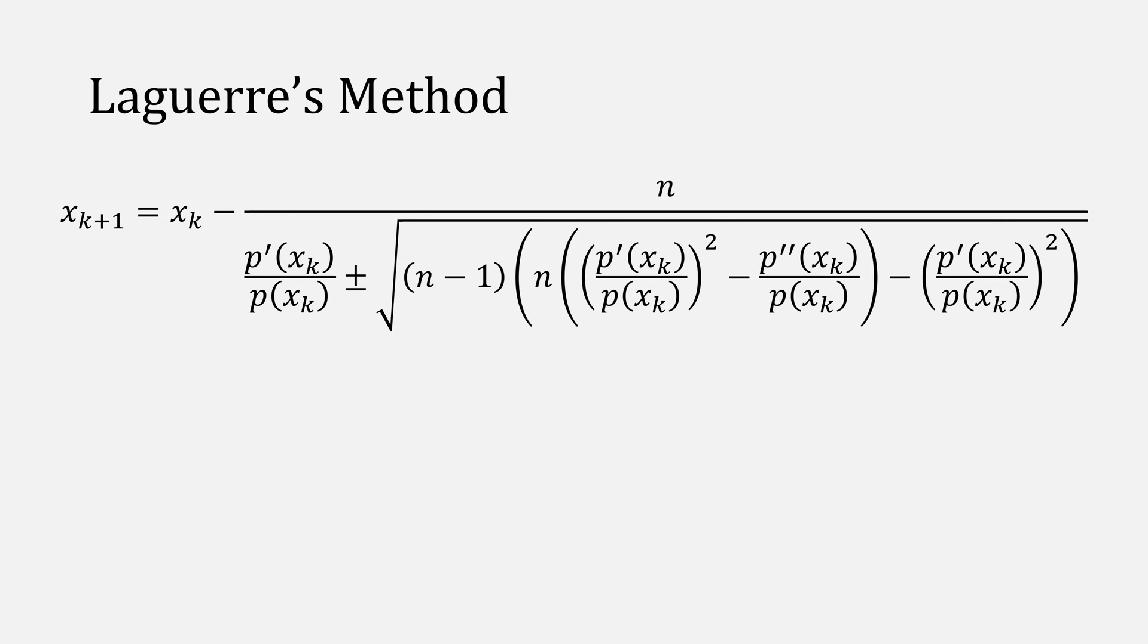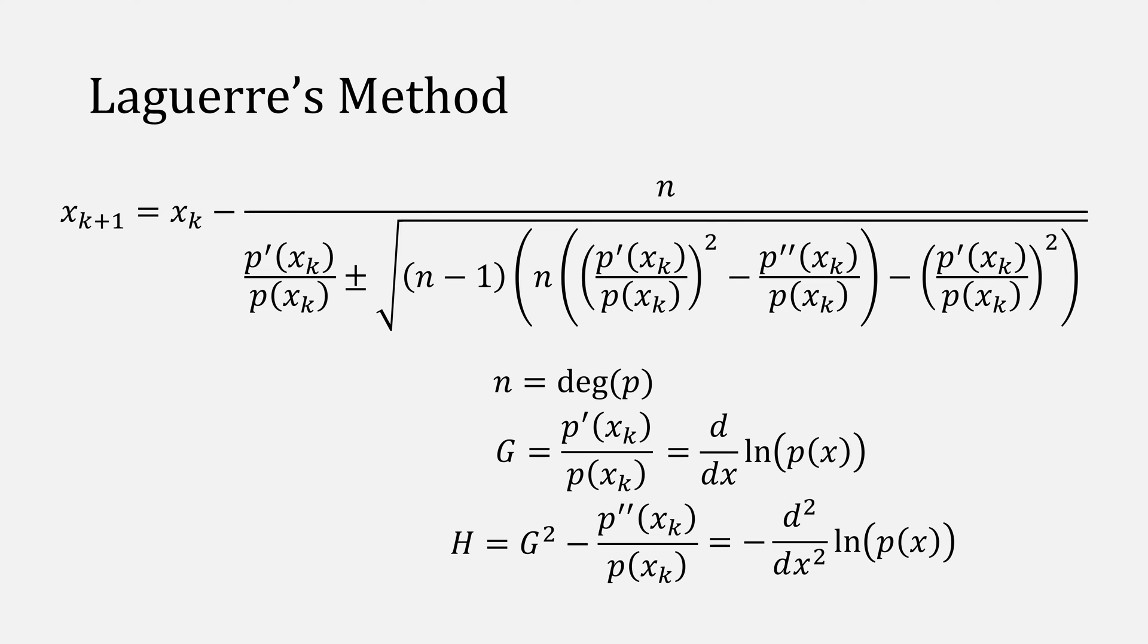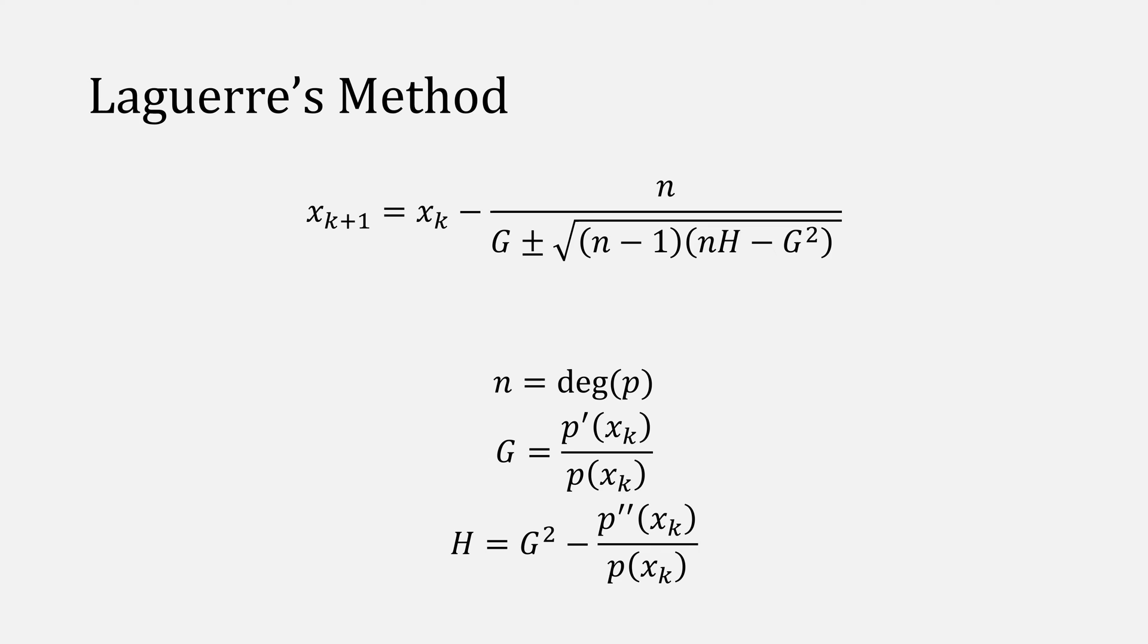So solving that equation, Laguerre's method gives you this expression. But don't panic! We'll break it down. n is the degree of the polynomial, and we'll actually use some helper variables to simplify things. We'll let the variable g be p prime divided by p, and the variable h be g squared minus p double prime divided by p. We're not coming with these expressions from thin air though. g is equal to that derivative of the natural log, and h is equal to that second derivative. This greatly simplifies our expression, but we still have this pesky plus or minus sign to deal with, and the way to solve it is to pick the value for the sign that will make our denominator largest in magnitude. This way we'll take a smaller step size and go to our closest root.